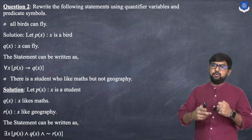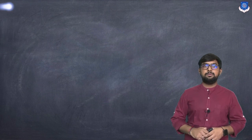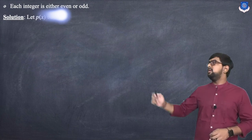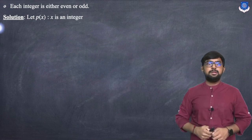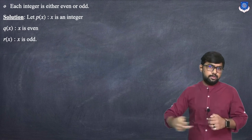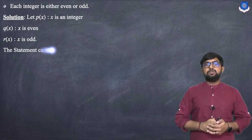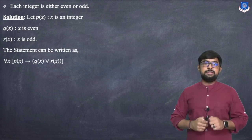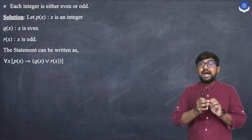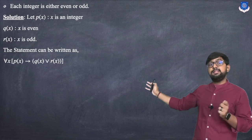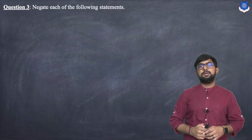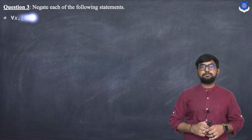Next: 'each integer is either even or odd'. Let P(x) be 'x is an integer', Q(x) be 'x is even', and R(x) be 'x is odd'. The symbolic form is: ∀x, P(x) → (Q(x) ∨ R(x)), meaning for every x, if x is an integer then x is either even or odd.